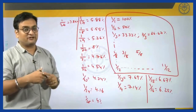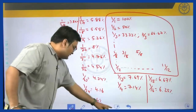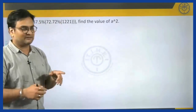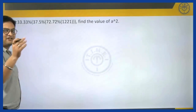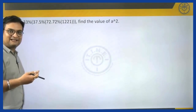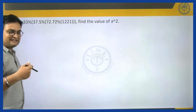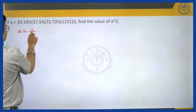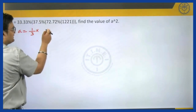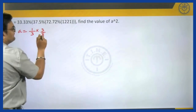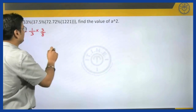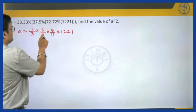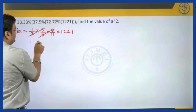So just try to memorize these — they will be directly useful in really complicated problems, like this one. Let us convert every percentage into a fraction, because generally analysis in fractional terms is simpler than in percentage terms. So what does this mean? A will be equal to — 33.33 percent is 1/3, 37.5 percent when you look at the corresponding fraction is 3/8, and 72.72 percent corresponds to 8/11, times 1221. When you simplify, 8 cancels out and you are left with 1/11.